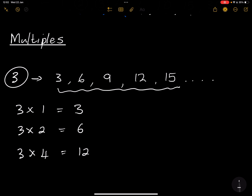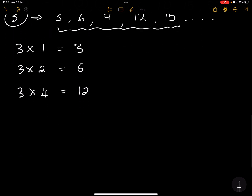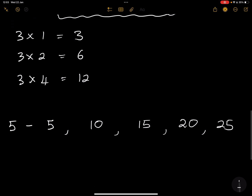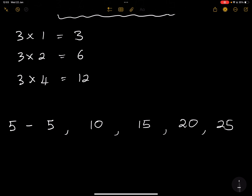Before we end this video, let's look at multiples of 5. Can you give me at least 4 of them? That's 5, that would be 10, that would be 15, that would be 20, that would be 25 — and you can continue on and on. When you multiply 5 by any number, whatever the outcome is gives you a multiple of 5.